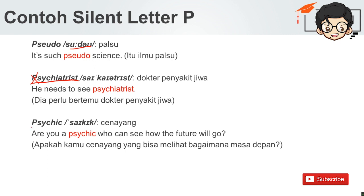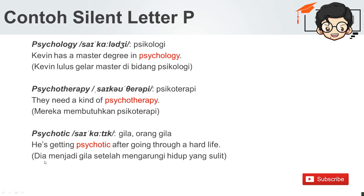Atau contoh yang lain ada di kata psychic — cenayang. Are you a psychic who can see how the future will go? Apakah kamu cenayang yang bisa melihat bagaimana masa depan? Kemudian, psychology. Kevin has a master's degree in psychology. Kevin lulus gelar master di bidang psikologi.